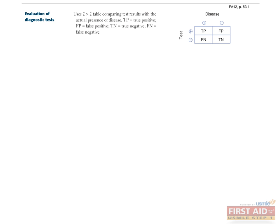First, let's review how to approach questions that deal with diagnostic tests. You should always start by drawing a two-by-two table comparing the test results with the actual presence of disease. A true positive is when the test is positive and the subject has the disease of interest. A false positive is when the test is positive but the subject does not have the disease. A true negative is when the test is negative and the subject does not have the disease of interest. A false negative is when the test is negative but the subject actually has the disease.